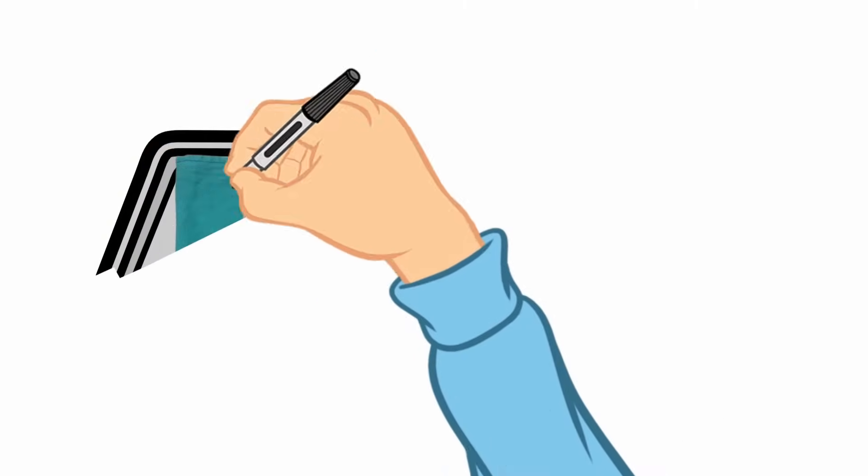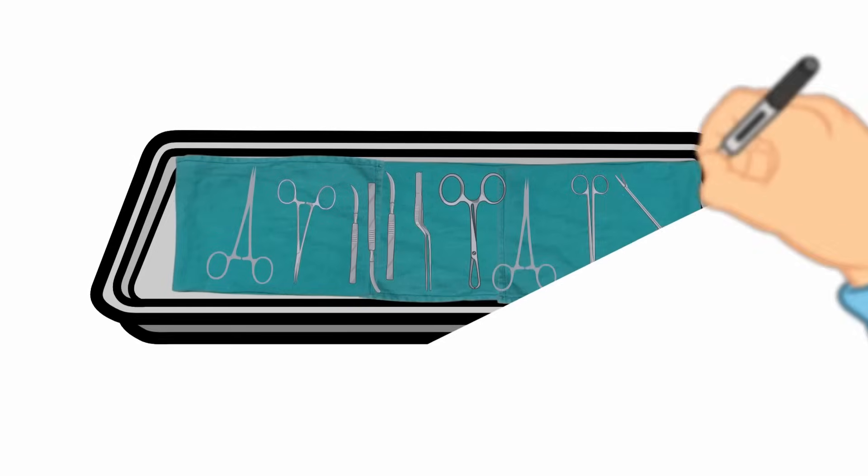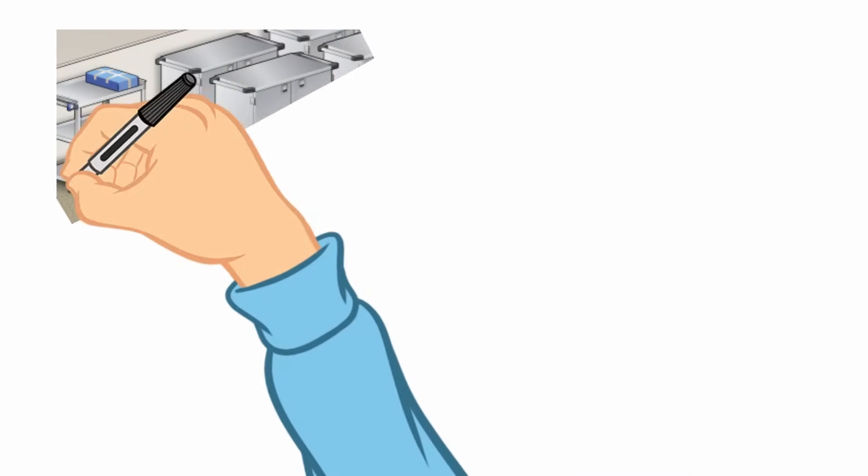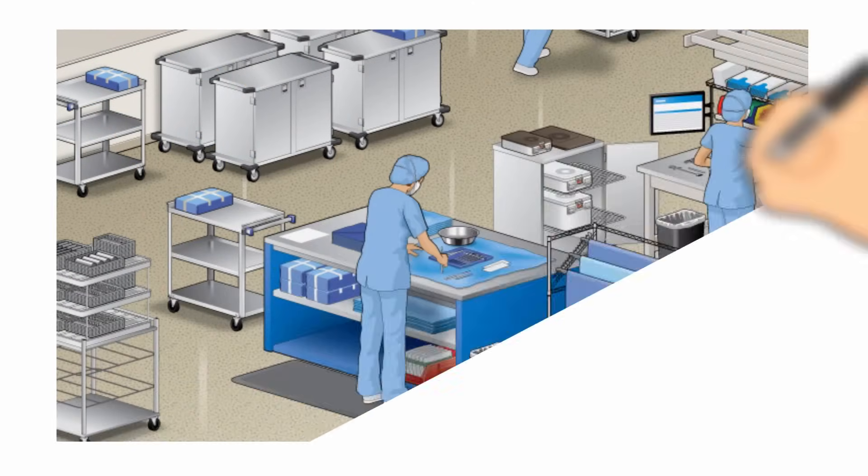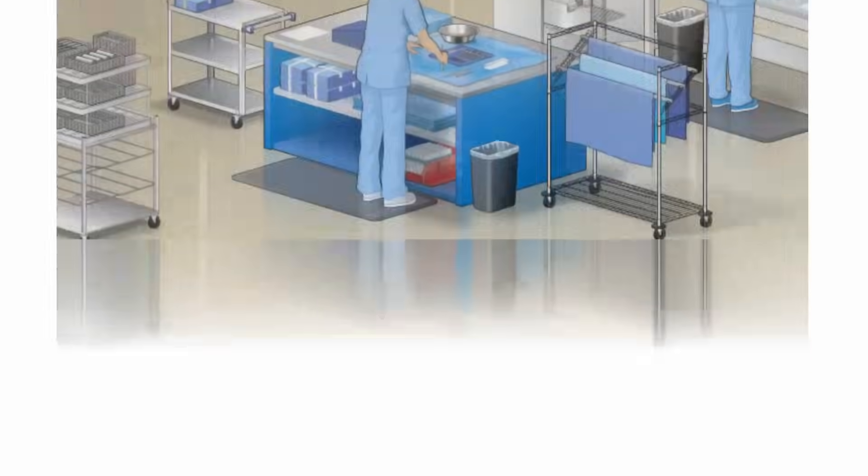After decontamination, instruments are inspected for functionality, cleanliness, and assembled in trays or containers according to their specified count sheets. Depending on the department you work for, you might split duties like an assembly line where you assemble a tray and another tech packages, or you might assemble and package your own trays.